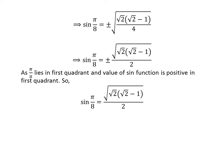As pi upon 8 lies in the first quadrant and the value of the sine function is positive in the first quadrant, sine of pi upon 8 is equal to the square root of square root of 2 times (square root of 2 minus 1) upon 2.